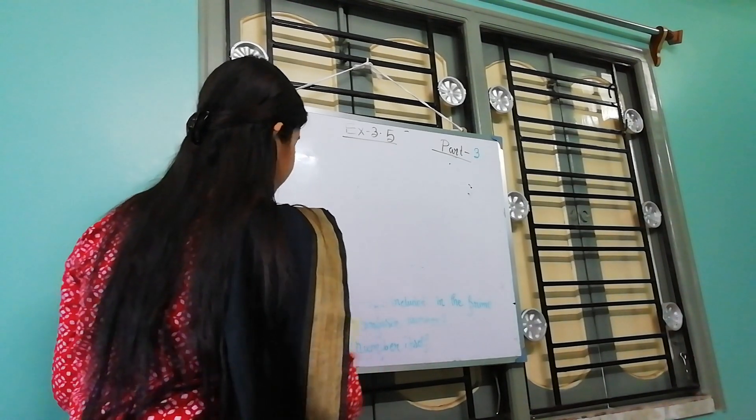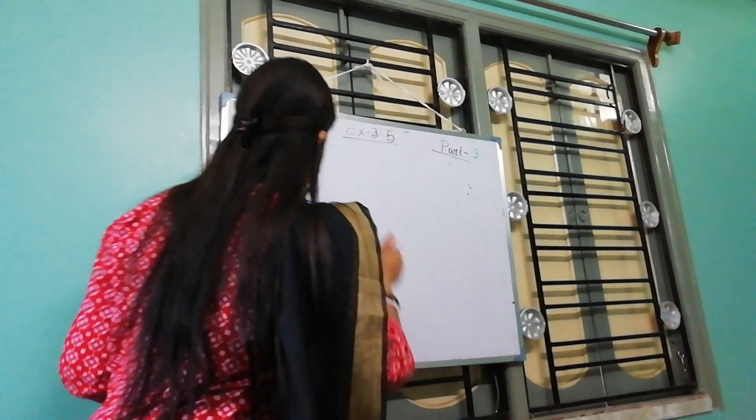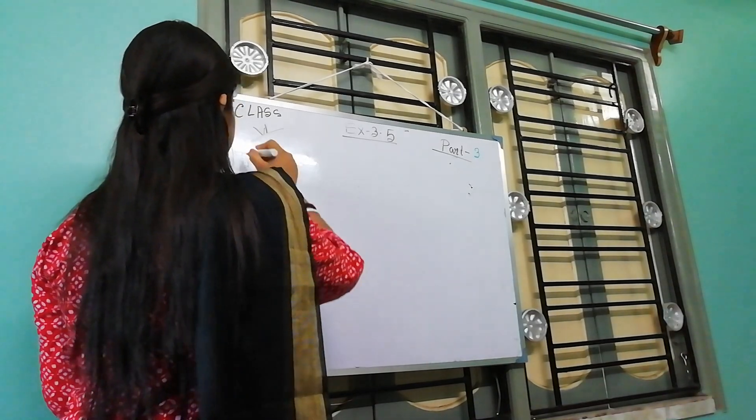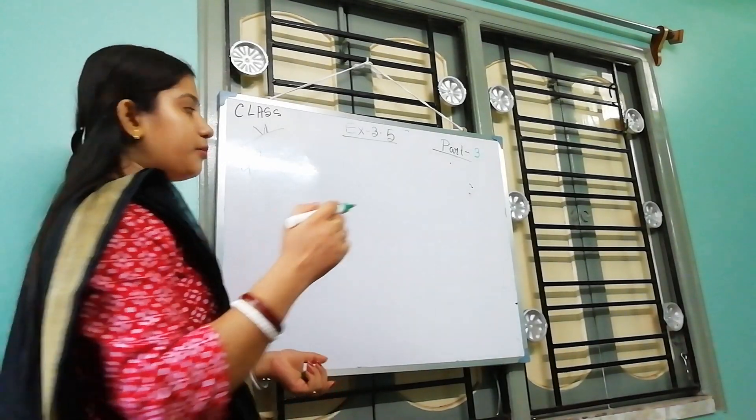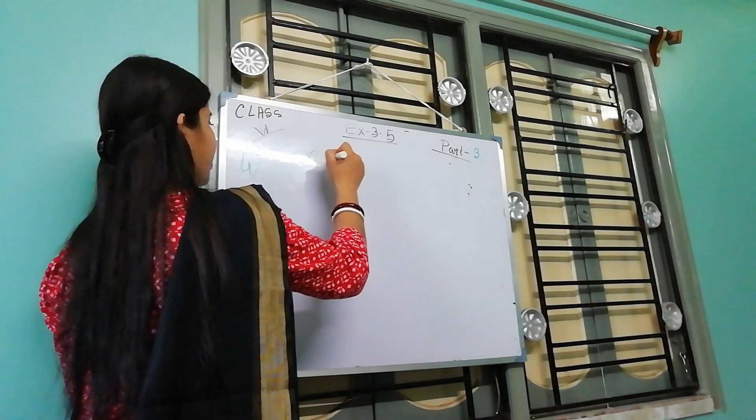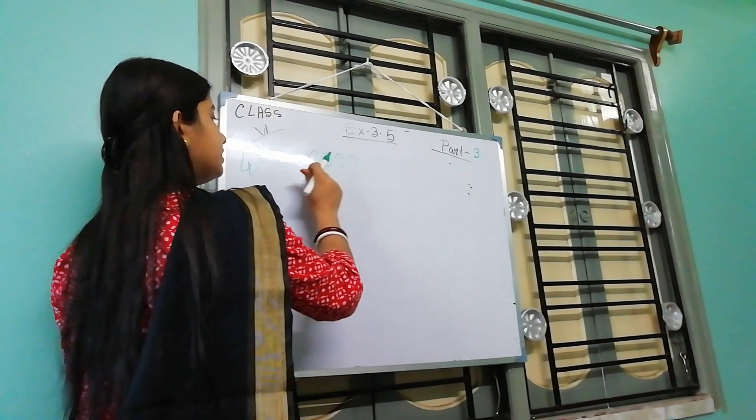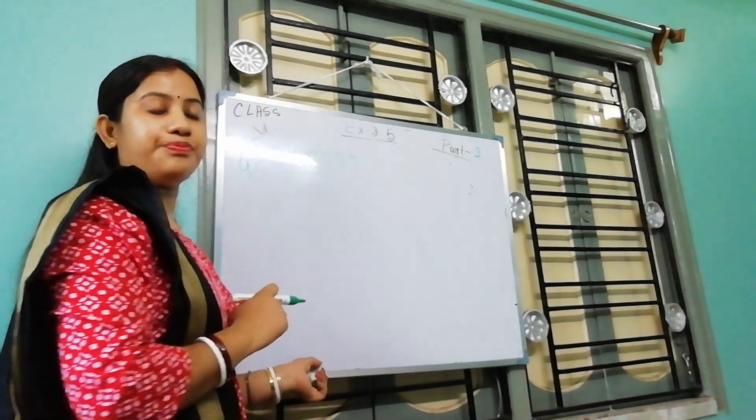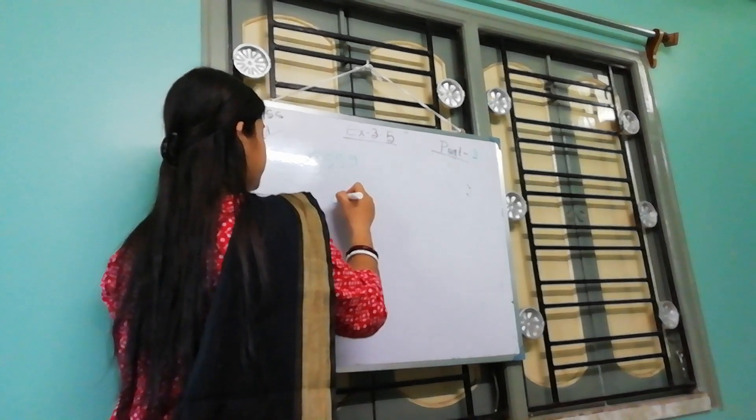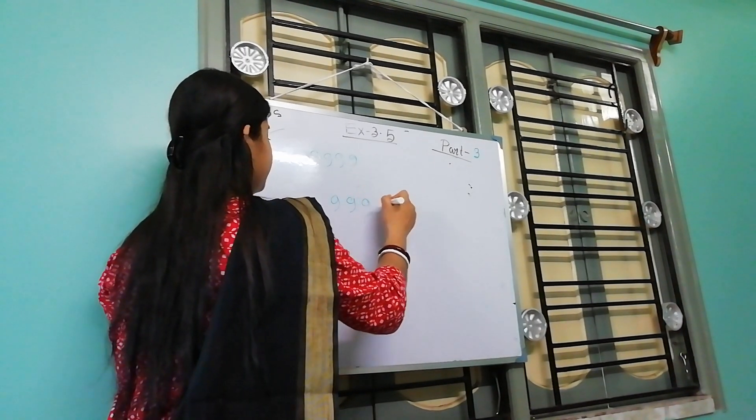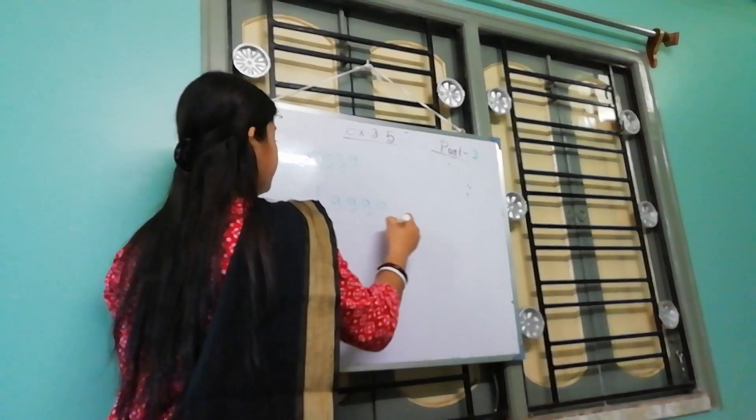Now in next number 4. Write the greatest 4-digit number. So this is the greatest 4-digit number. And factorization in the prime factor. So by division method we find the factor of this.